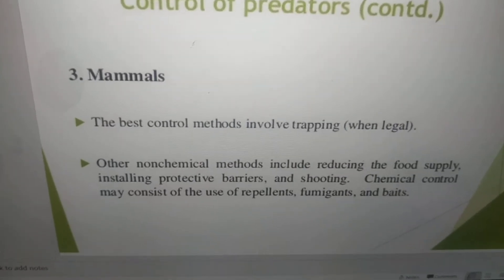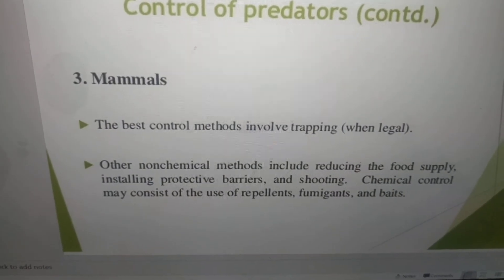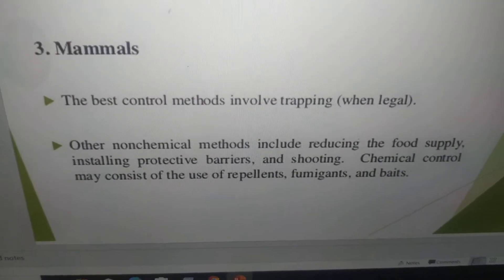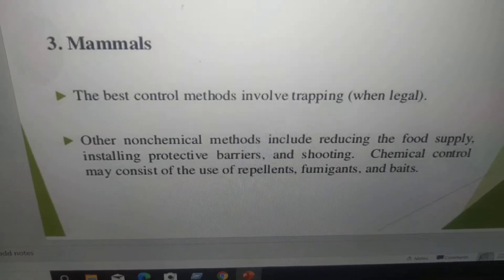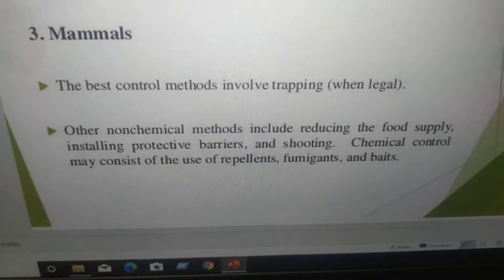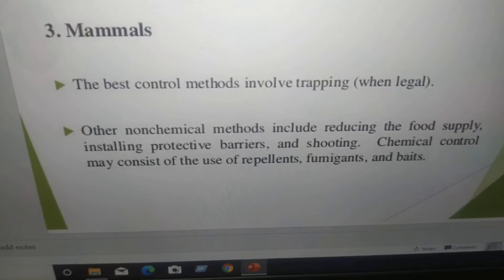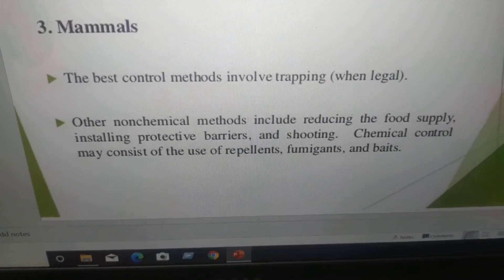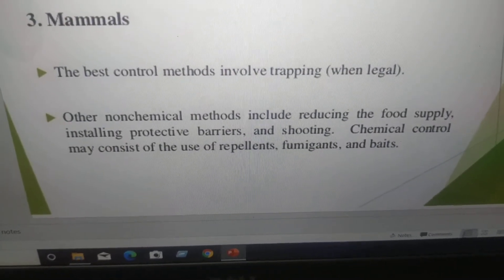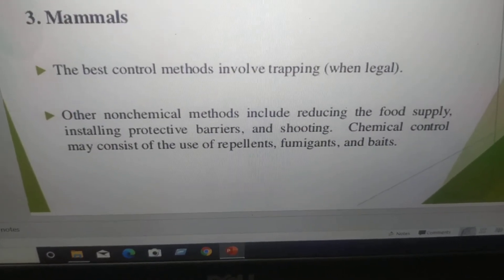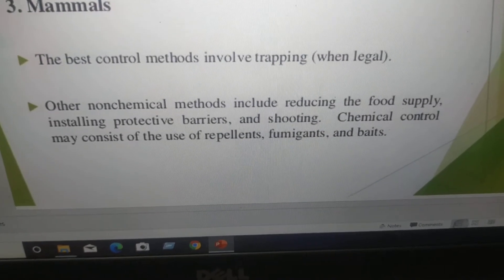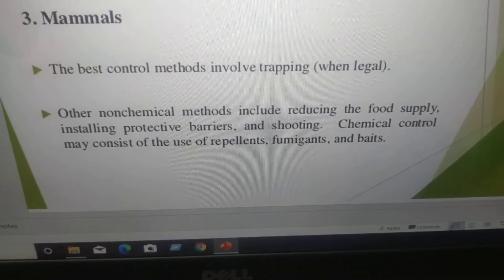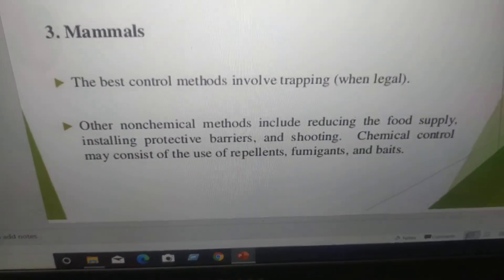How to control mammals? The best control method involves trapping of the mammals. Legal procedures are available and you have to follow the legal procedure to kill the mammals. Other non-chemical methods include reducing the food supply, installing protective barriers, and shooting. Chemical control may consist of the use of repellants, fumigants, and baits.